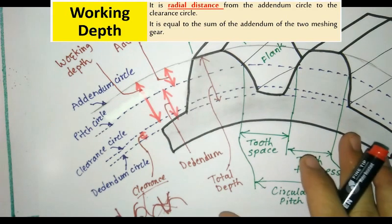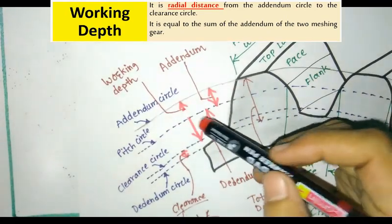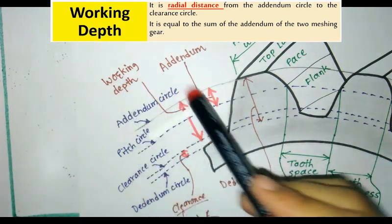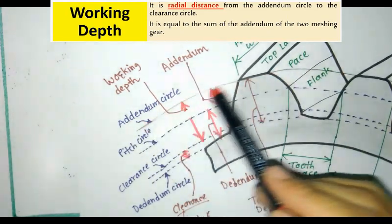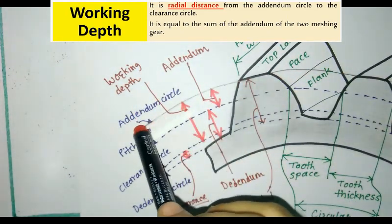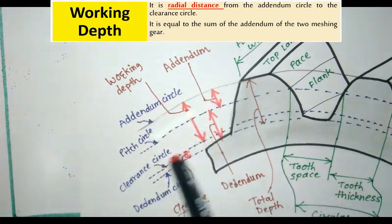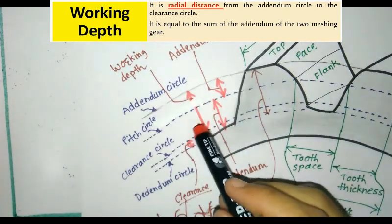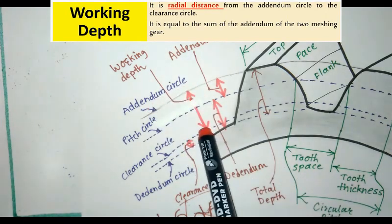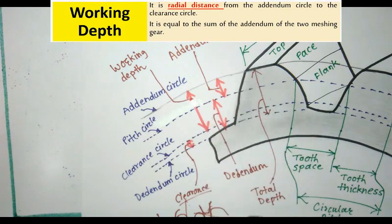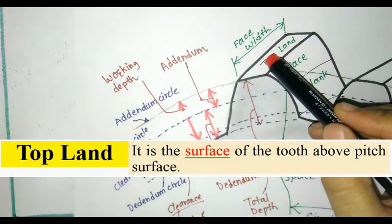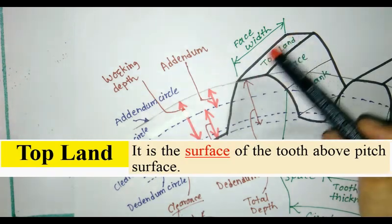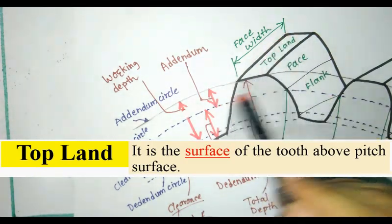Next one is working depth. Working depth is the radial distance from the addendum circle to the clearance circle. Next is top land. Top land is the surface of the tooth above the P surface.